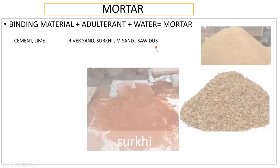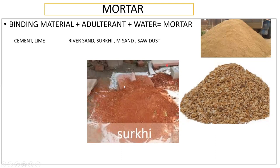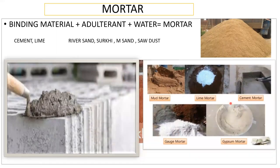To put this in a better way: river sand, surki — which is the powder of broken red bricks — and sawdust, which you get from cutting wood in a sawmill, are examples of adulterants. A mortar usually consists of cement and sand. We also have mud mortar, lime mortar, cement mortar, gauge mortar, and gypsum mortar.